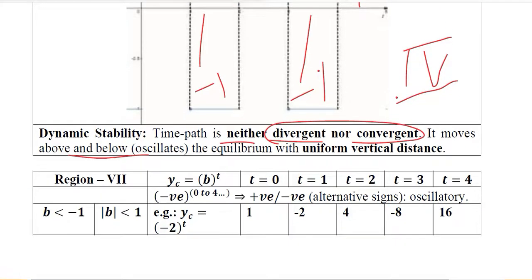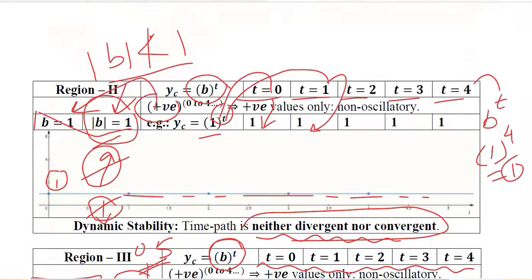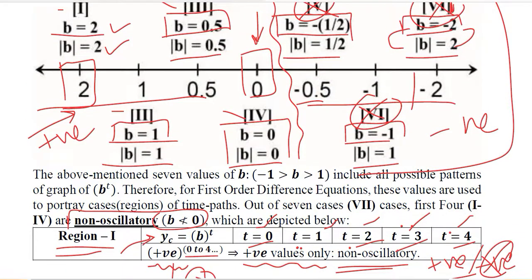Finally, we go towards the seventh and final case, where the value of b is further declined below minus 1 — for example, minus 2, which is the opposite of the first case where b was equal to 2. Region number 1 had b equal to 2, so this is a kind of mirror image. We started with 2 and now we end at the same value with the opposite sign, as we saw on the number line going from minus 2 to 2.